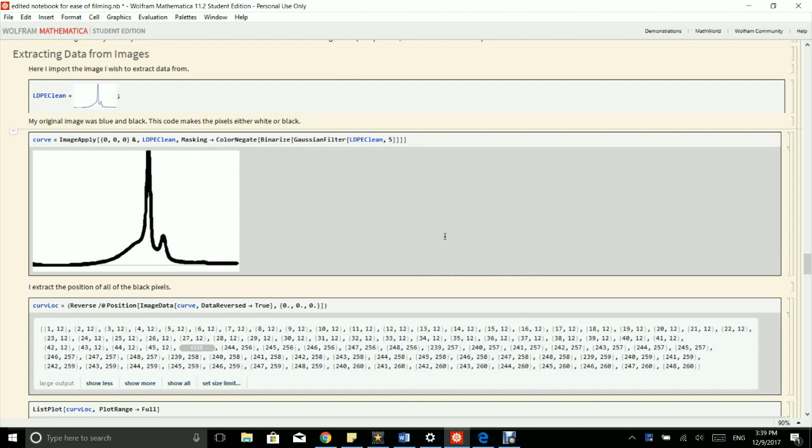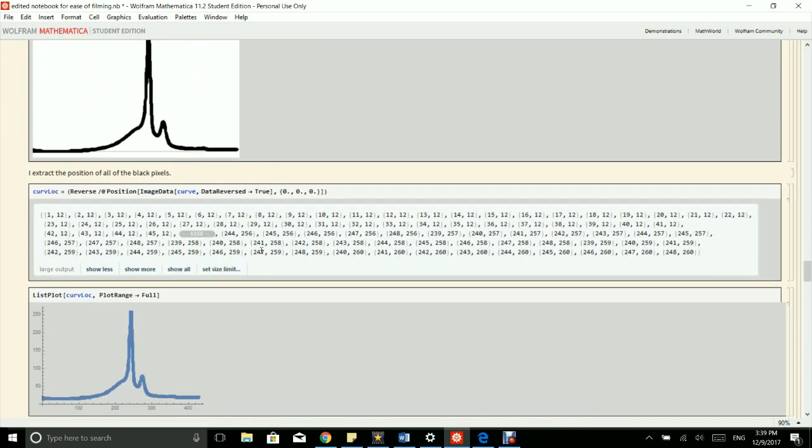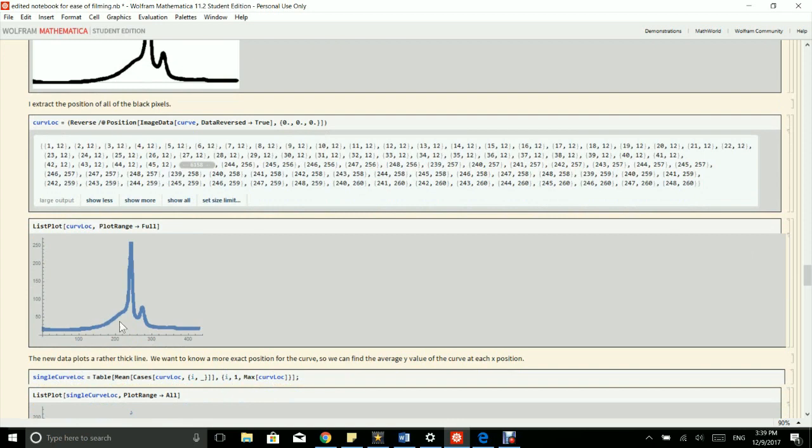One of the challenges with this method is I have to take data that's currently saved as a JPEG image and convert it into something Mathematica can use to find a best fit. So the way I do this is I import my JPEG image here, and then I use that and I convert it to be either black or white.